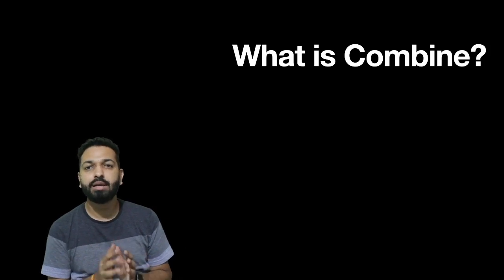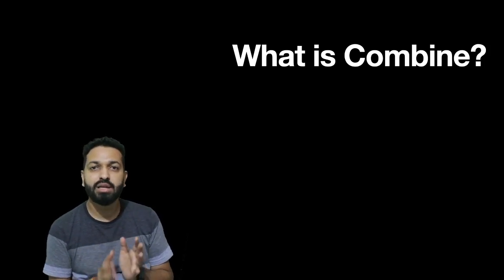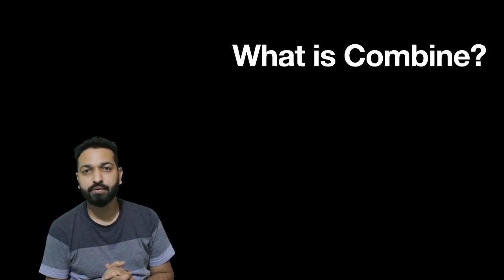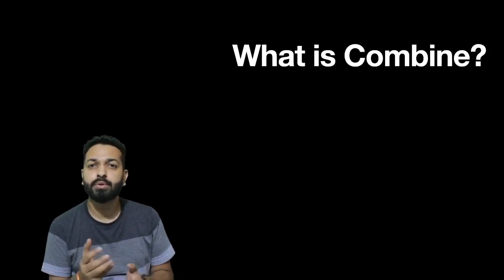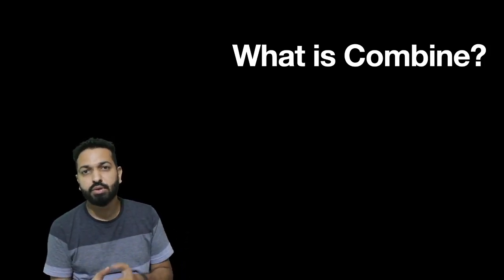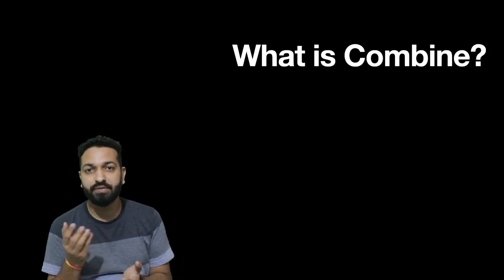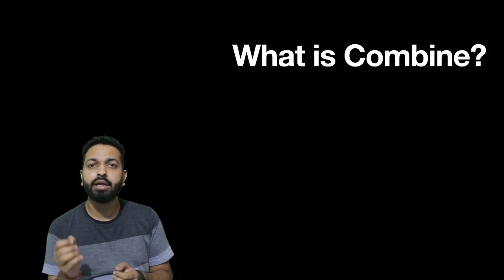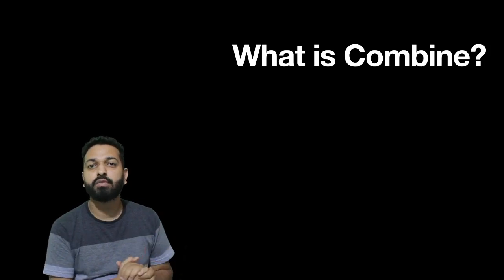Before jumping into the code, let's learn a little about Combine. Combine is a framework similar to Rx which allows you to write functional reactive code — it provides declarative APIs. Functional reactive programming is something that allows you to process values over time, to process something that will be happening at some point in time — asynchronous stuff. You can relate it with network calls or with notifications, because we don't know at what time we will receive a notification, be it push or local. Anything where we want to process values over time falls under the category of functional reactive programming.